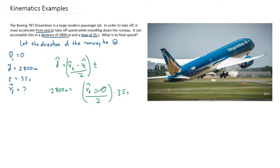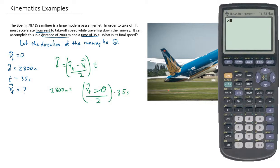And then I'm going to divide both sides by 35 seconds, and multiply both sides by two. So 2,800 divided by 35, and then times by two, is equal to 160.